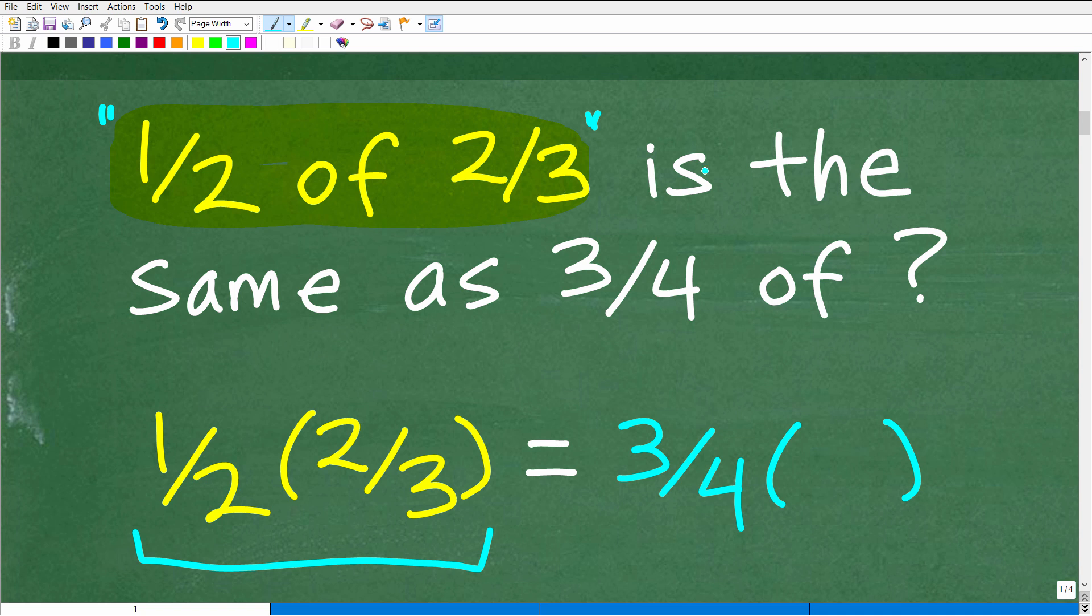So 1 half of 2 thirds, now in mathematics, when you see the word is, that's always the equal sign, okay? So we'll kind of build a nice little equation here. So 1 half of 2 thirds, that's this right here, is the same as what? Well, it's the same as 3 fourths of some number, right? So that would be 3 fourths of, again, we're going to be multiplying by some number. We don't know what this number is. So how can we figure this number out?